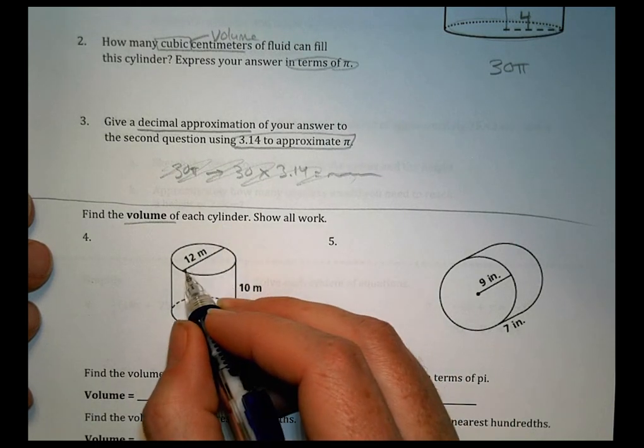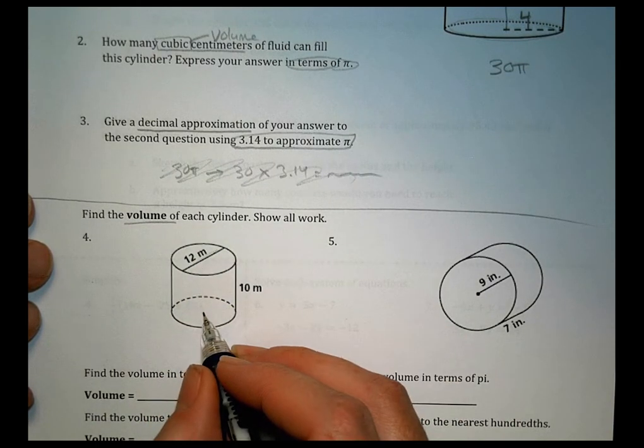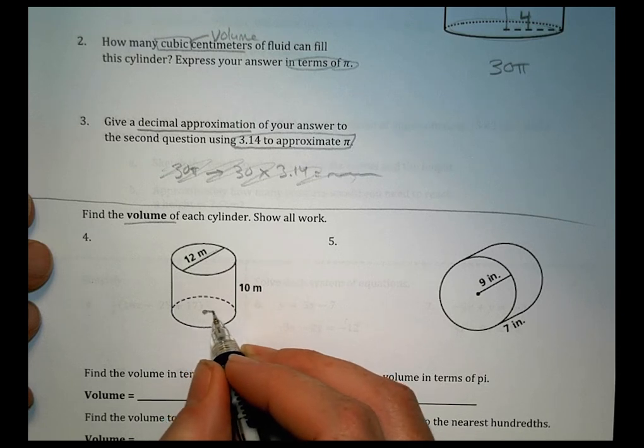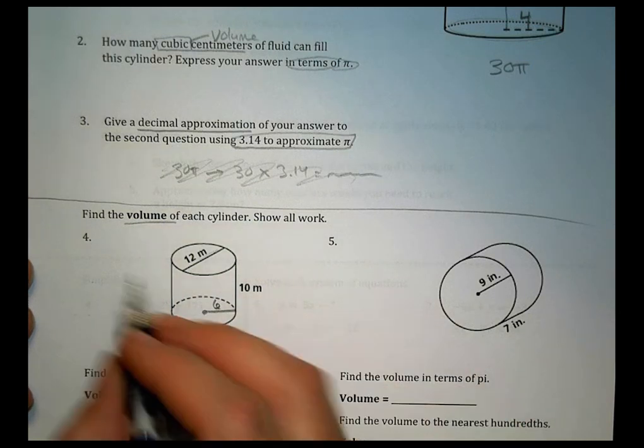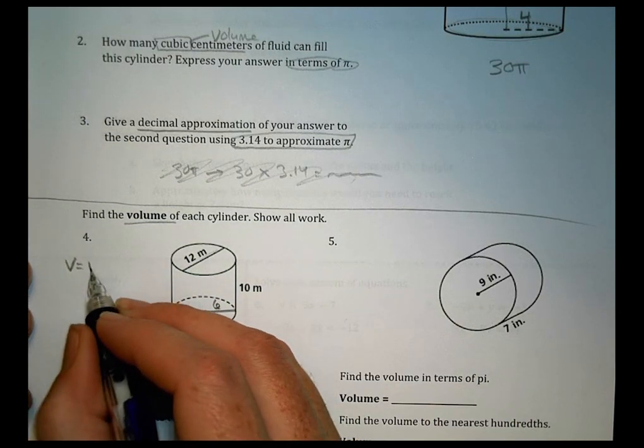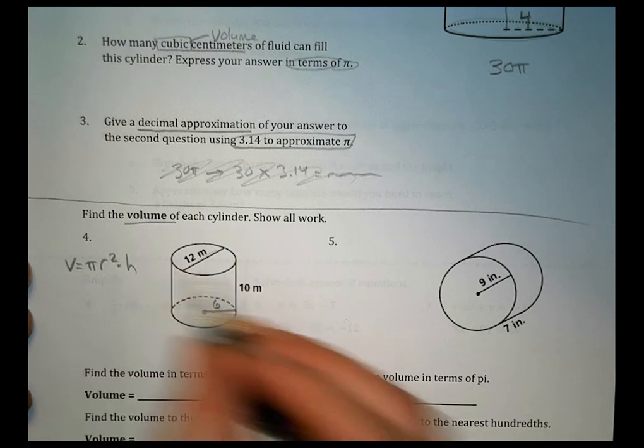So the first one, we have a diameter that's given to us of 12. Now a diameter is twice the radius, so that means the radius is going to be 6, and so our volume is found by doing pi times the radius squared times the height.